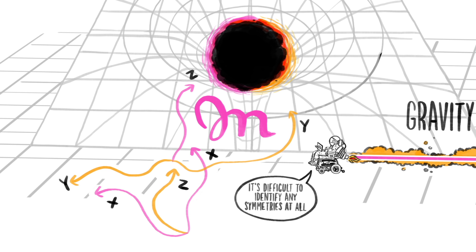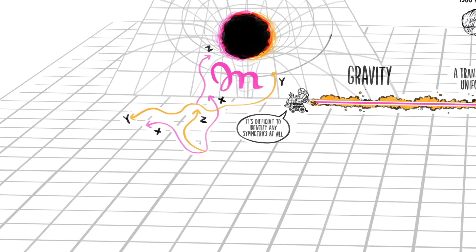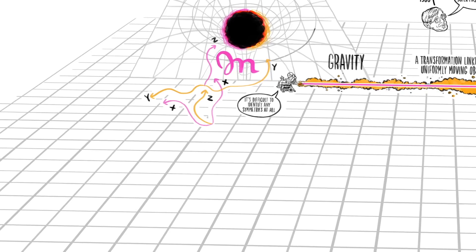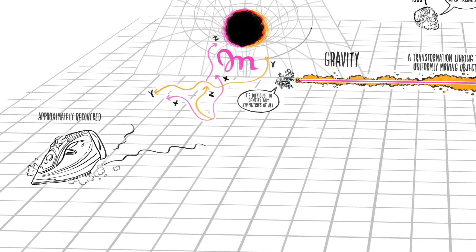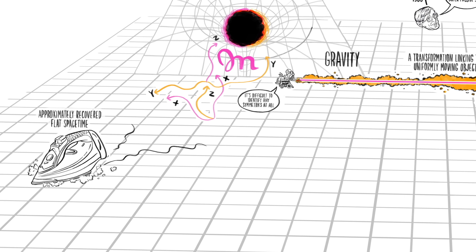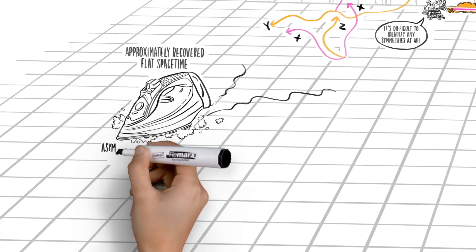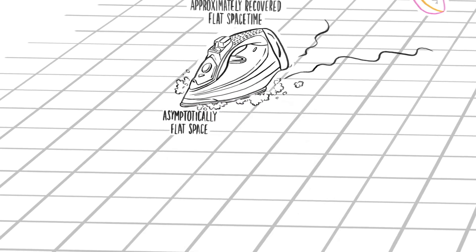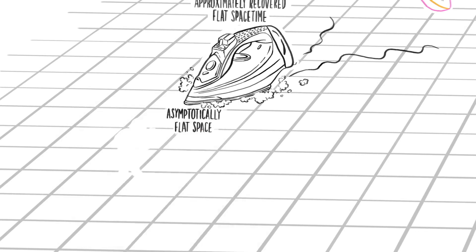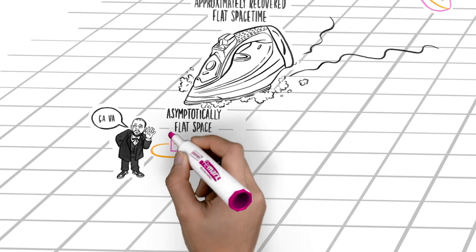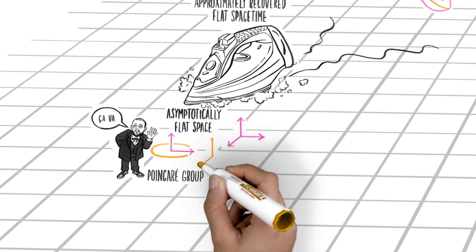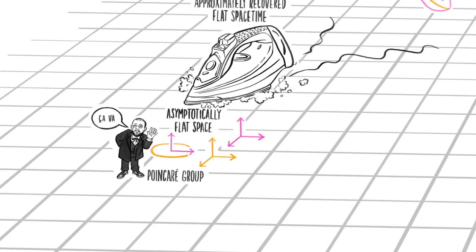However, as we move further away from a black hole, the curvature gets less and less, until infinitely far away, we have approximately recovered flat spacetime. This region is known as asymptotically flat space. It might be expected that in this region, we would again find the Poincaré group as the set of symmetries.